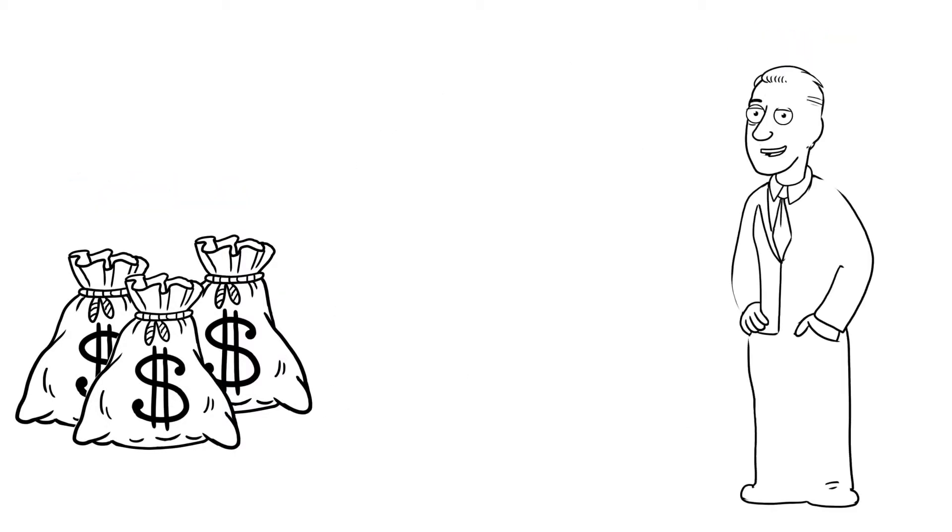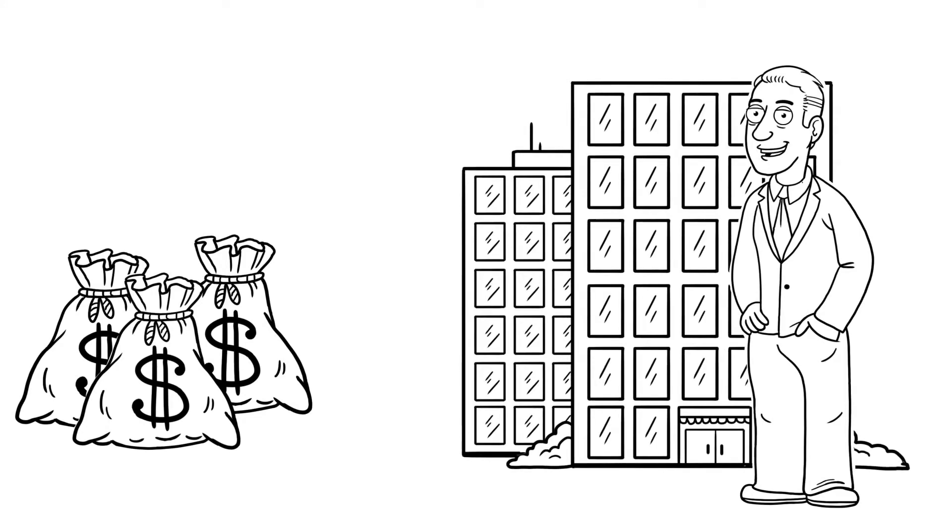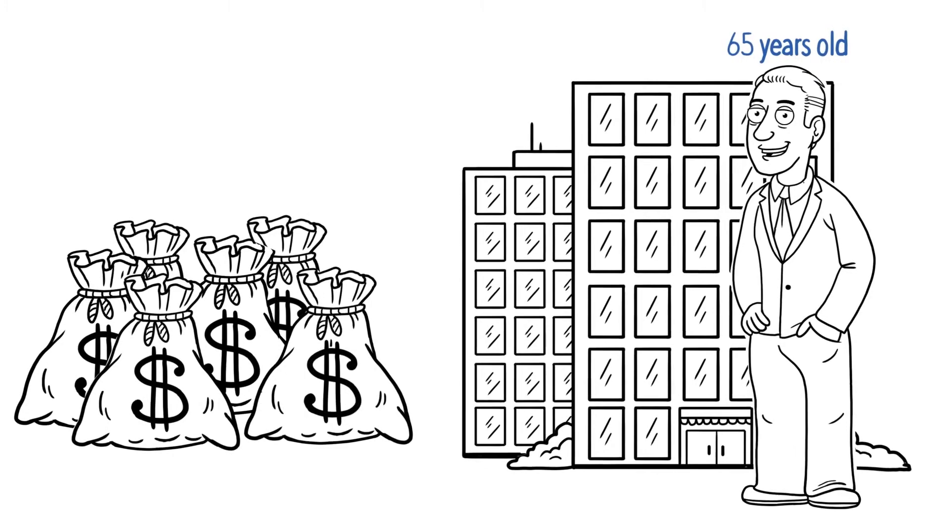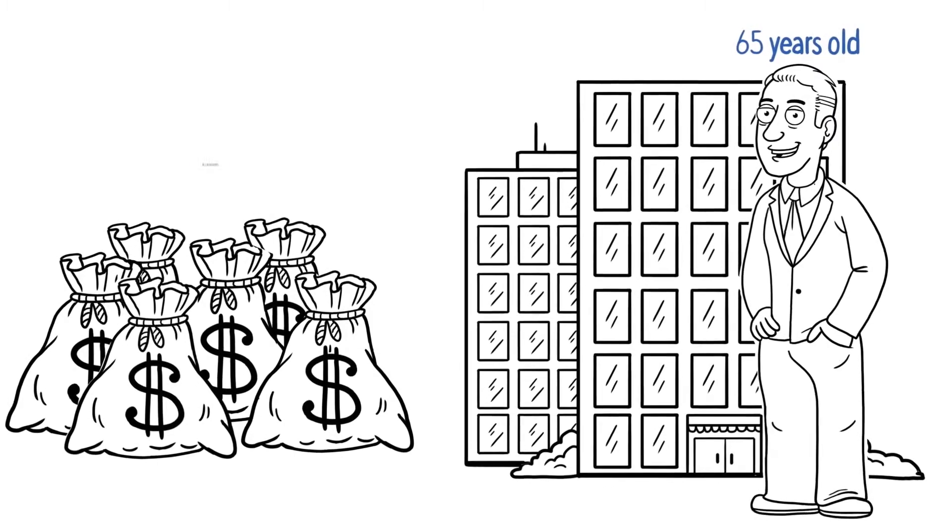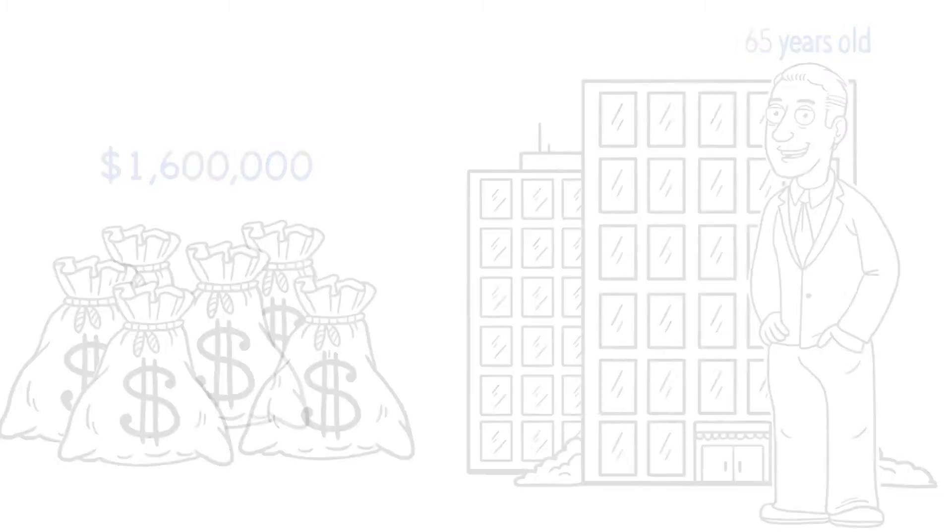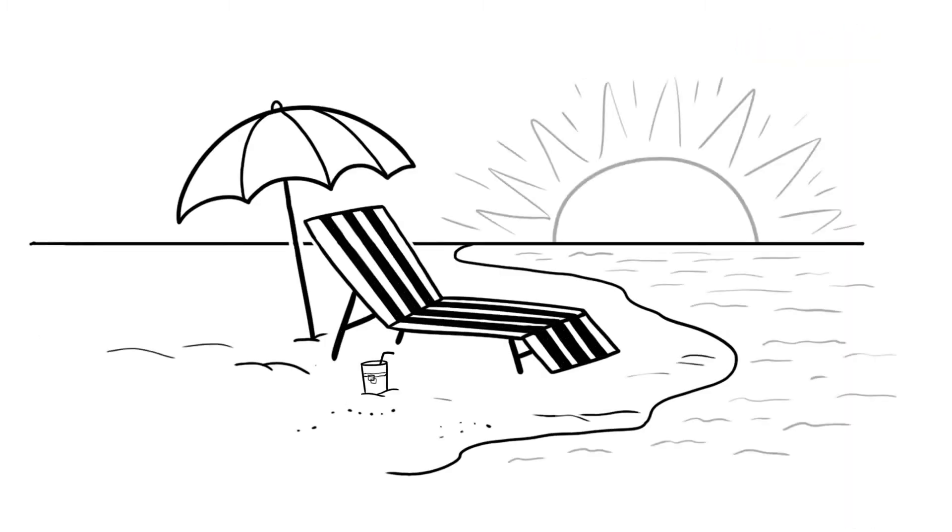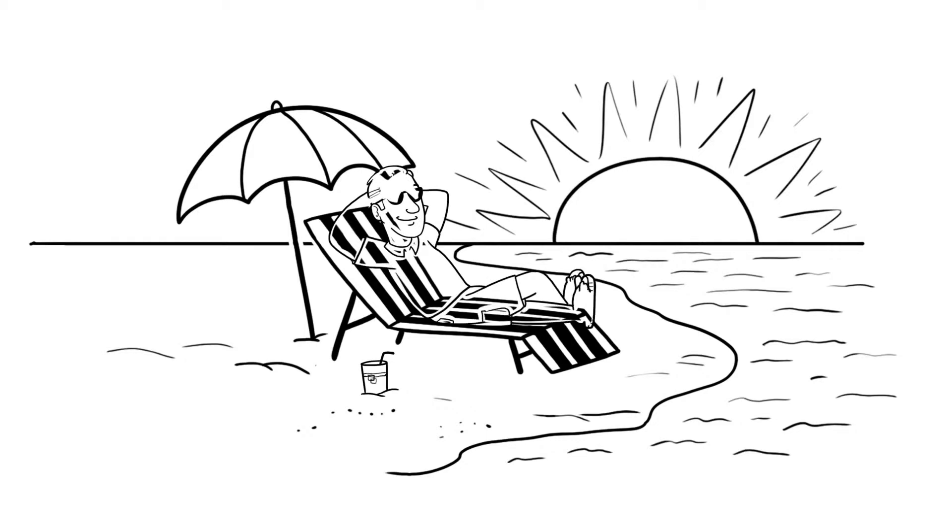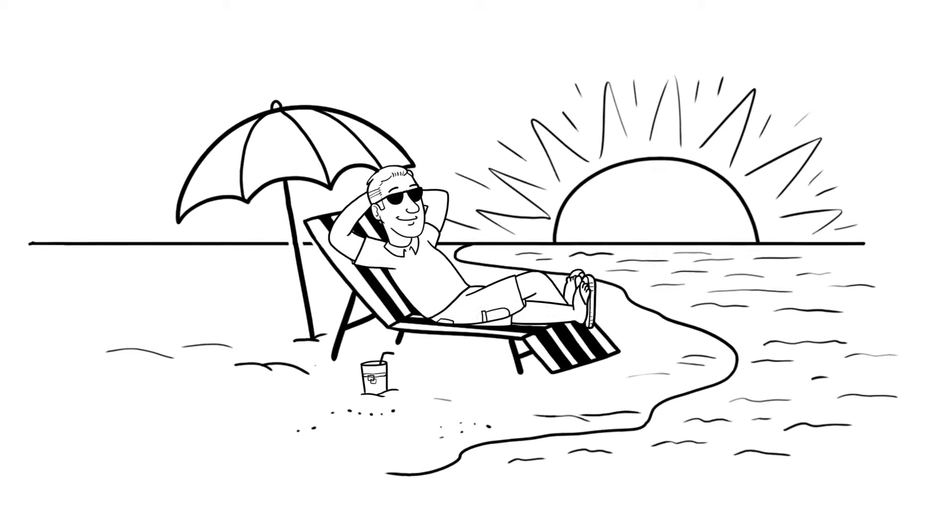And it doesn't end there. If your child continues to contribute into the program as an adult, then by the time they reach 65, the projected cash value will have grown to an estimated $1.6 million. They'll also have an additional tax-free retirement income stream of an estimated $265,000 per year.